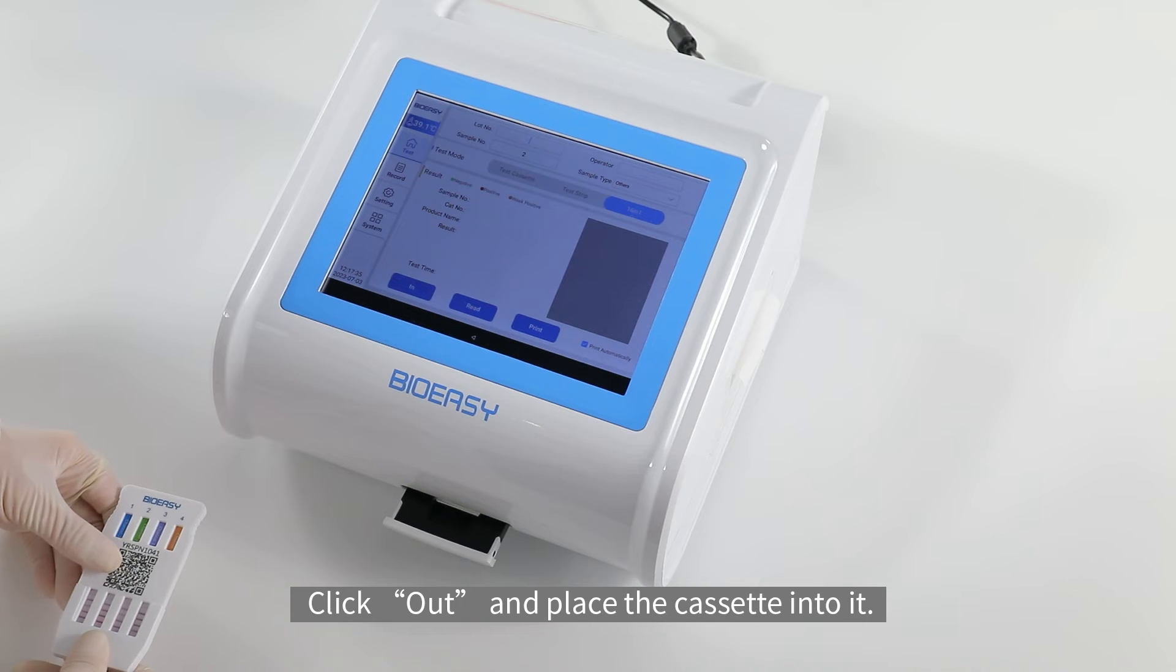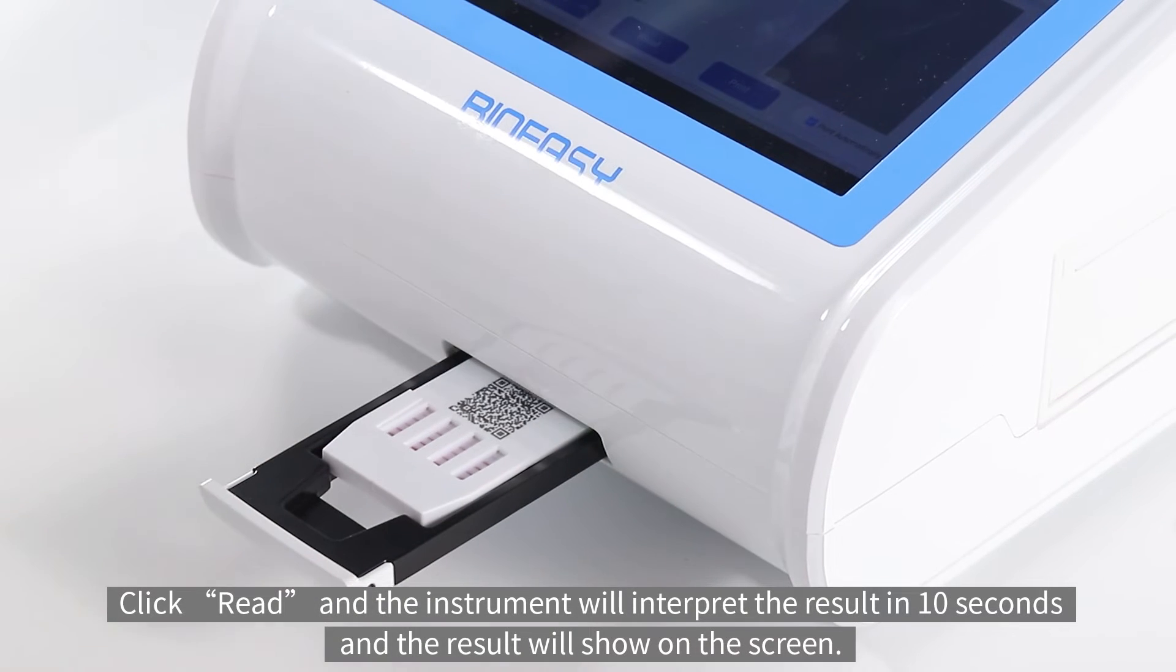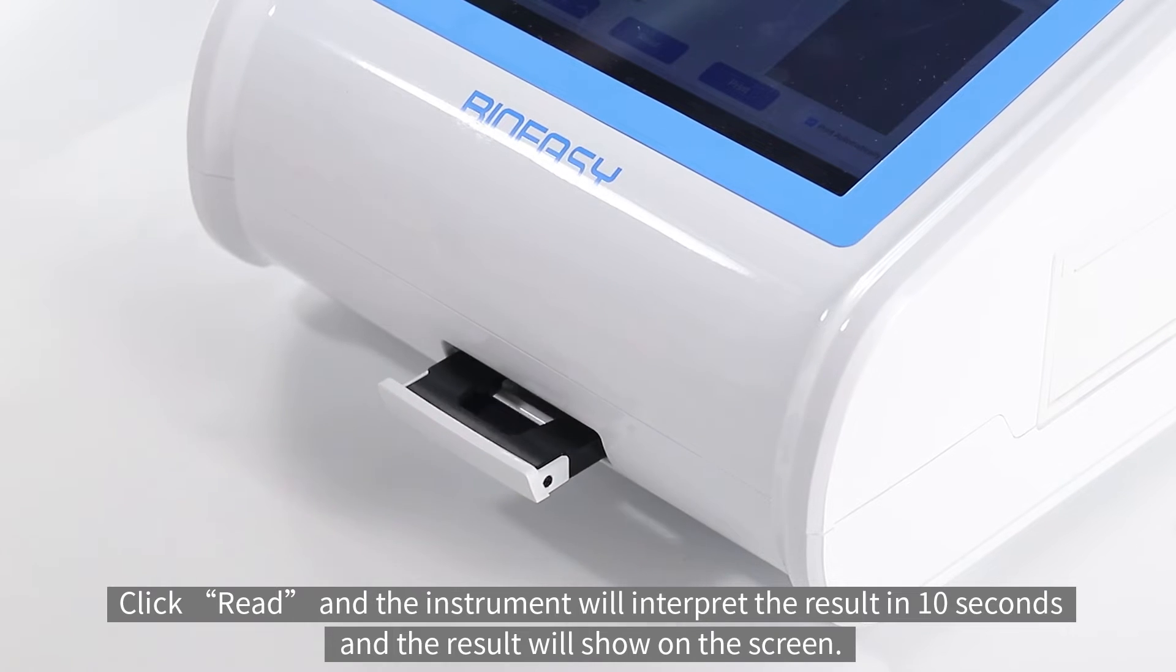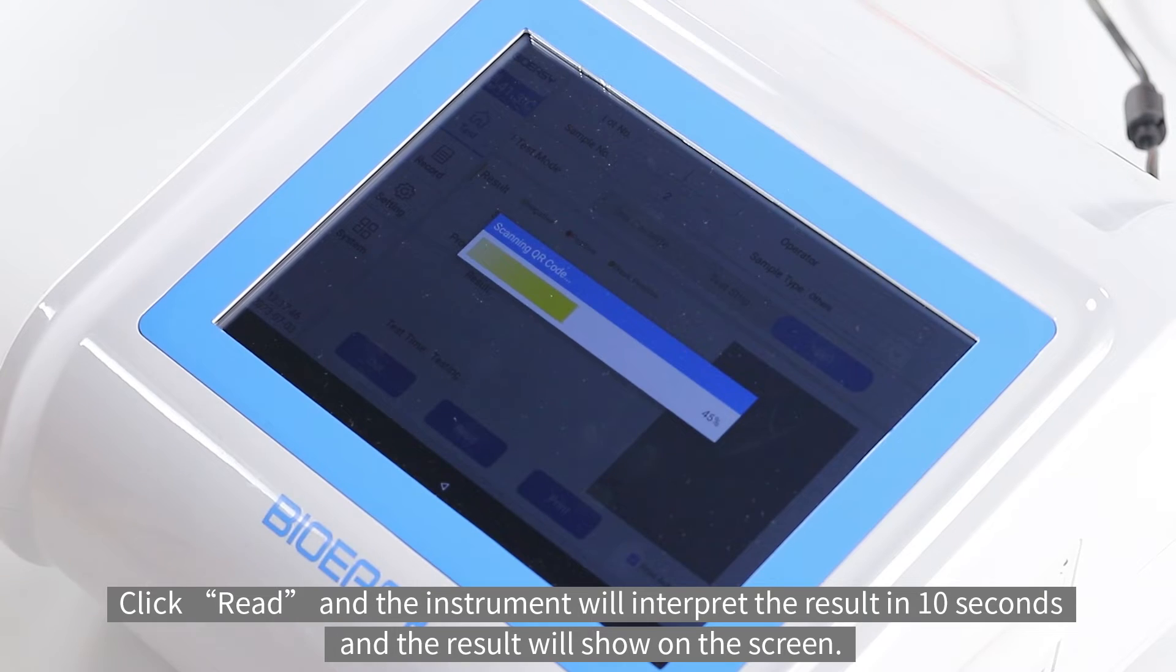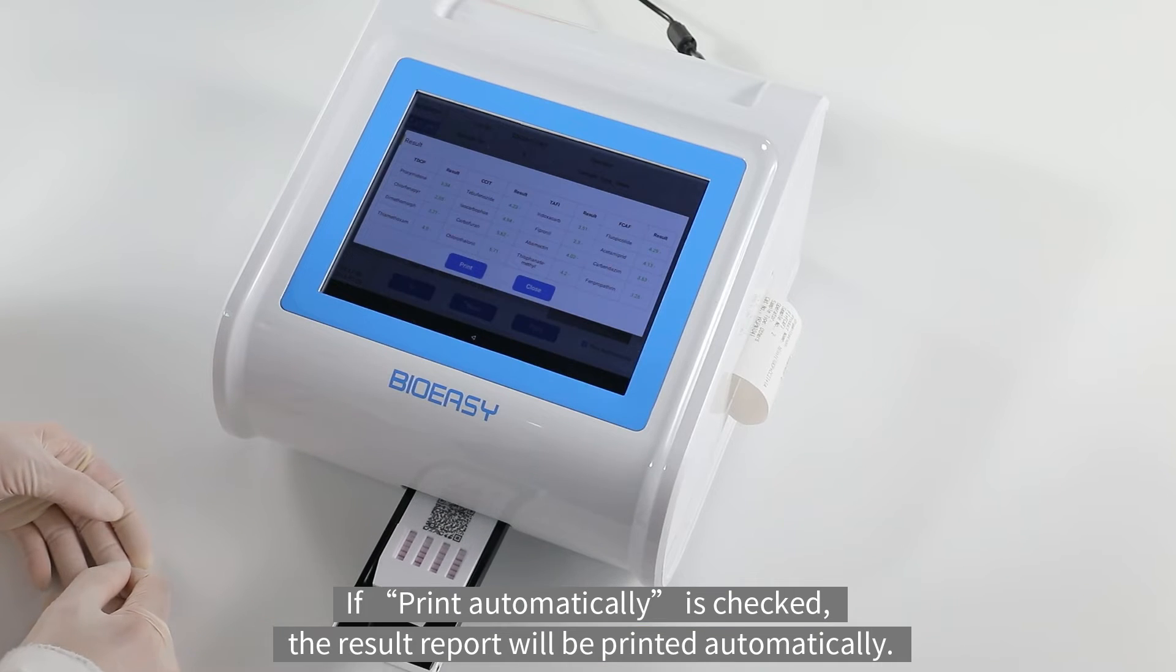Click out and place the cassette into it. Click read and the instrument will interpret the result in 10 seconds and the result will show on the screen. If print automatically is checked, the result report will be printed automatically.